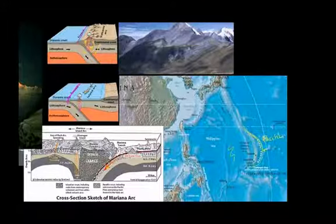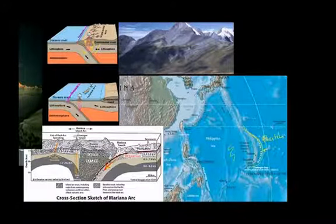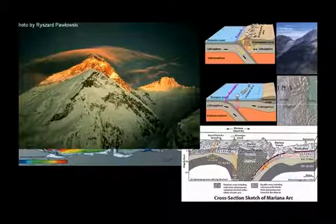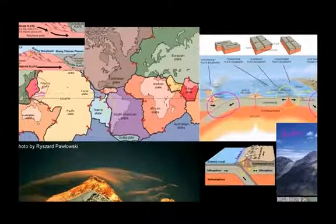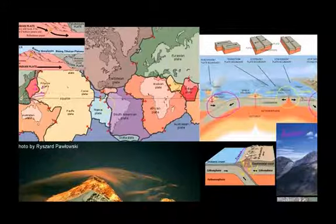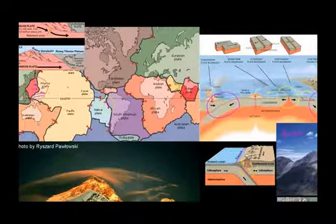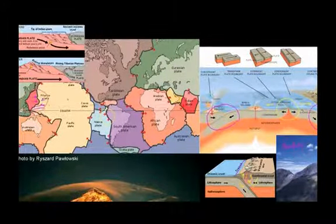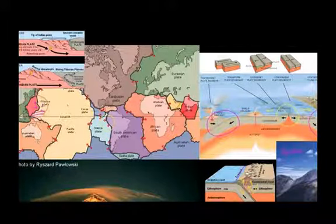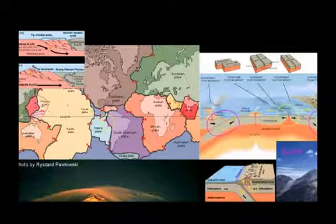Now the last type of convergent boundary is when you have two parts of continental crust running into each other. So that's the situation that we have where the Indian plate is running into the Eurasian plate. And I think you might already guess what's going to happen there. When you have two pieces of continental crust running into each other, one isn't more or less dense than the other. And so at least the crustal portions of them are just going to keep jamming into each other. And so they're just going to push things upward.